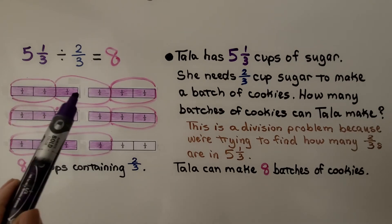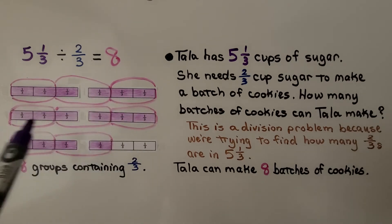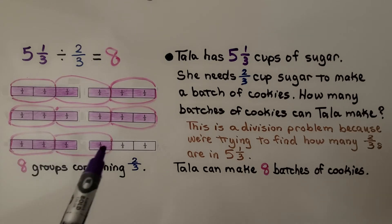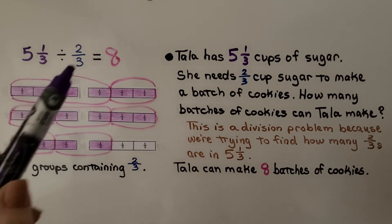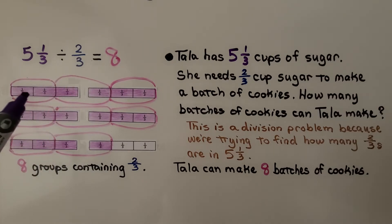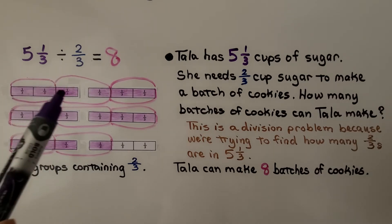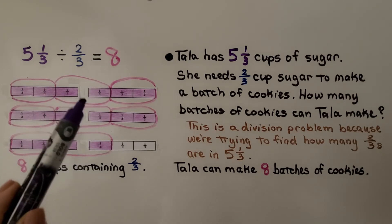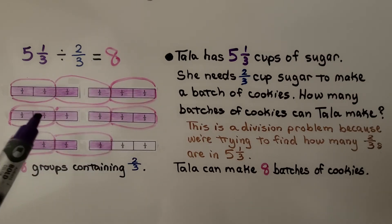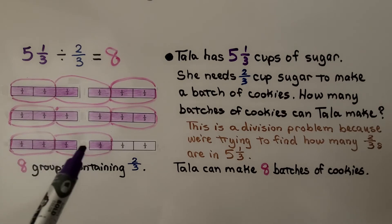We color in one whole, two, three, four, five, and one-third. And then we make groups that contain ⅔ because that's the divisor. We have ⅔ circled here, ⅔ here, ⅔, ⅔, ⅔, ⅔, ⅔.